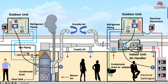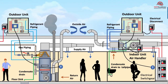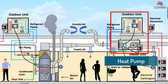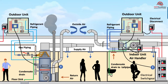Heating can be in the form of a gas furnace, electric strip heater, electric heat pump, hot water, or steam. Here we show two ways of getting heat to the occupied space using a split system. First, you can use a split system heat pump which works to cool the space in summer and heat the space in winter. See our video on heat pumps to understand how they work.